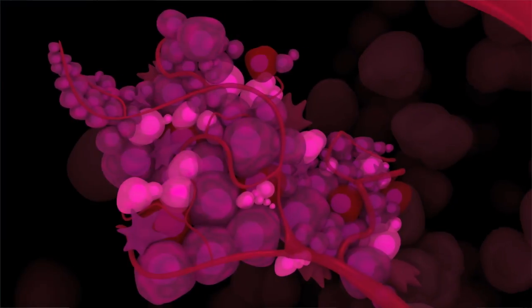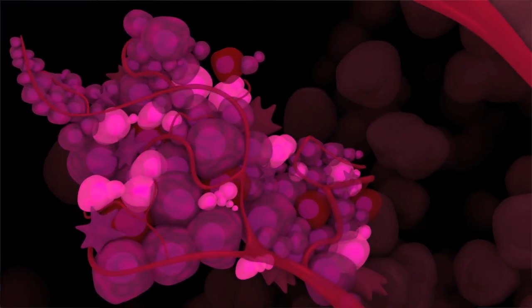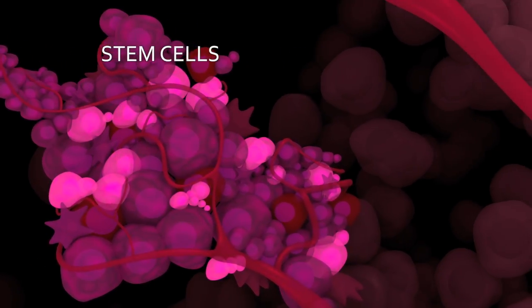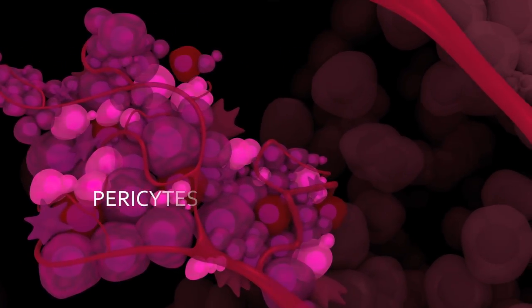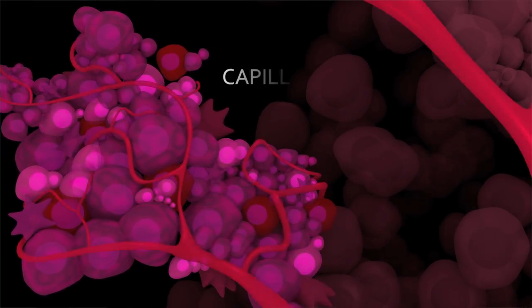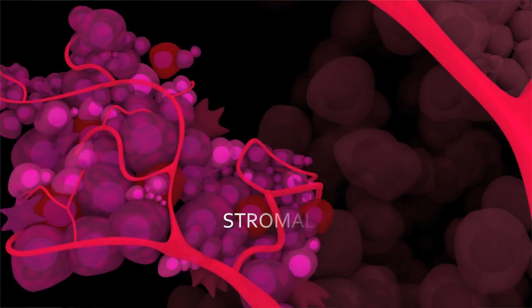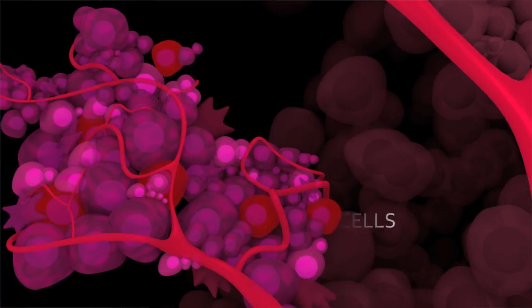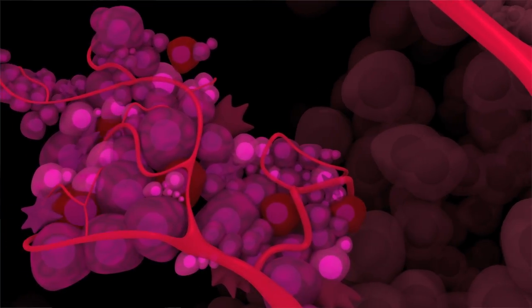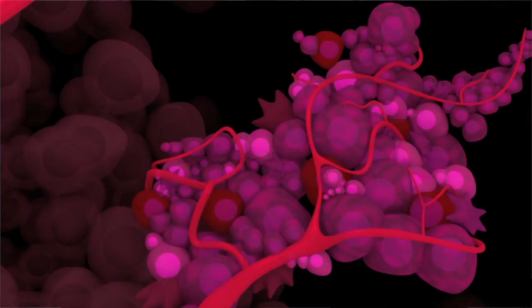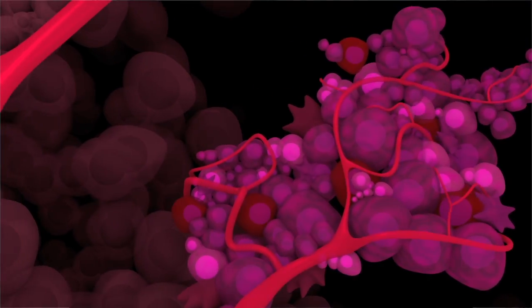A tumor is not a bag of tumor cells. It consists of cancer stem cells, pericytes, capillary cells, stromal cells, and so on. You have to eradicate several of these checkpoints.